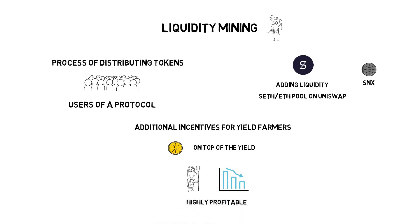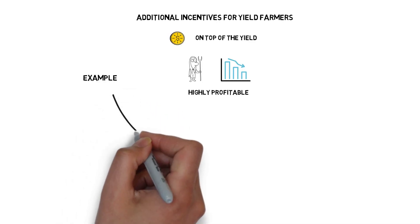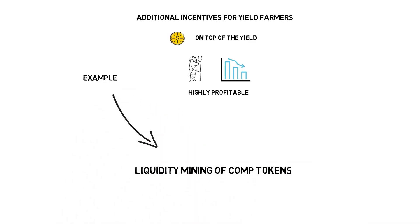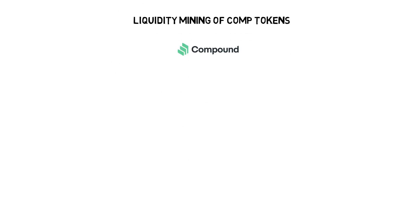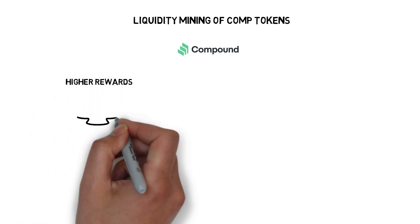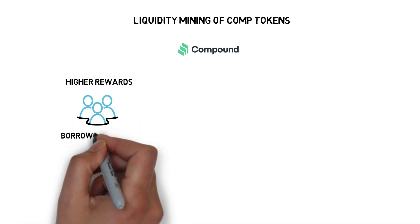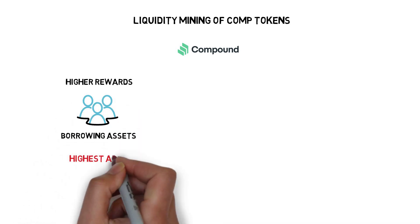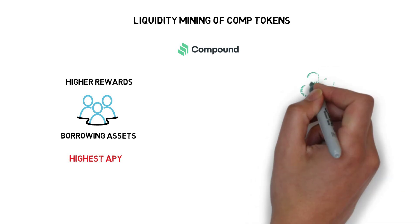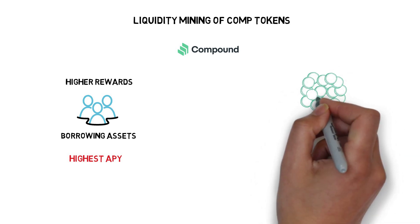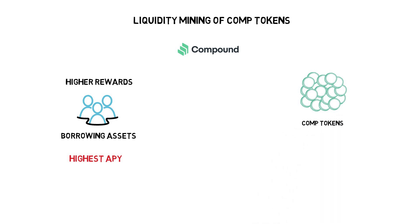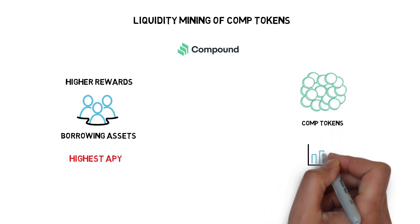A good example of this was the liquidity mining of COMP tokens introduced by Compound, which was initially giving higher rewards to users who were borrowing assets with the highest APY. This incentivized farmers to start borrowing assets, as the value of minted COMP tokens was compensating them for the high borrow rates they had to pay.